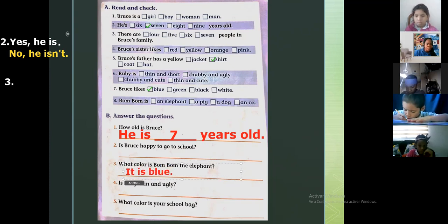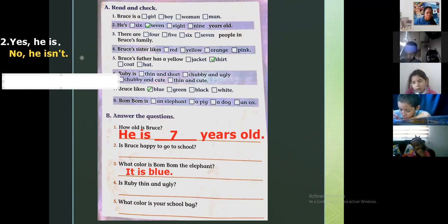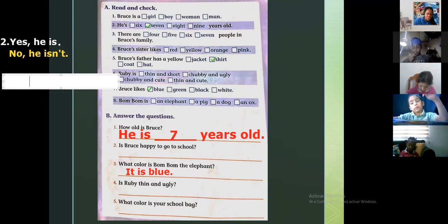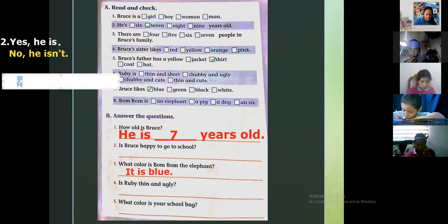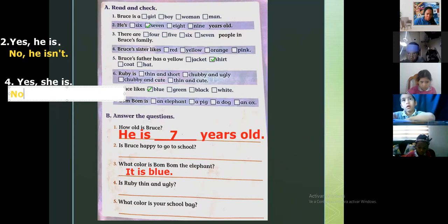Emily, quickly please. Vamos a la cuatro, el elefante de color azul, yes thank you. Recuerde que es un ejercicio. Is Ruby thin and ugly? Es Ruby delgada y fea, la hermanita de él? Si usted cree que lo es, usted va a poner yes. No va a poner yes he is, usted va a poner yes she is. Yes she is si usted cree que ella lo es. Si usted cree que ella no lo es, entonces usted va a colocar no she isn't. No she isn't. Ahí están las dos respuestas, escoja una sola.